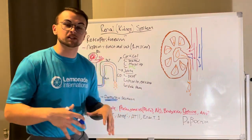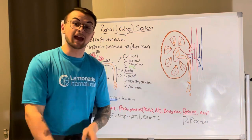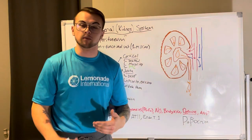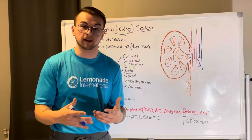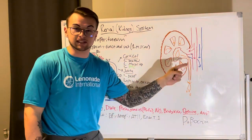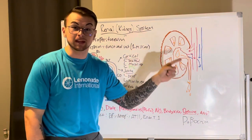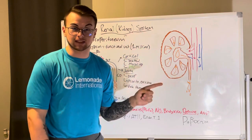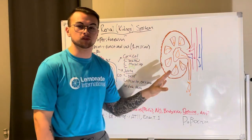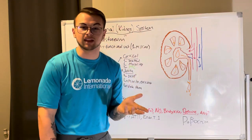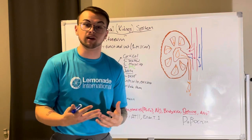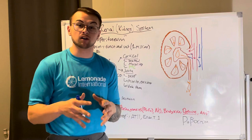The kidneys are so important that the heart pumps 25% of its cardiac output — stroke volume times heart rate, about five liters per minute — to them. About a quarter of all blood pumped goes to the kidneys. Your brain only gets 15%. The kidneys demand this much blood because they are crucial for waste removal, blood pressure regulation, electrolyte balance, and volume control.